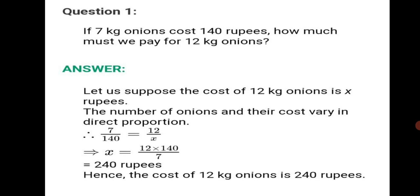Now, tell me students — if 7 kg requires 140 rupees, will 12 kg require more than 140 or less than 140? Definitely the cost will also increase. Both the quantities are increasing. That means we have a direct proportion here. The number of onions and their cost vary in direct proportion. When can we say they are varying in direct proportion? When the quantities are increasing in both ratios or decreasing in both ratios — not one increasing and the other decreasing. We see 7 kg onions cost 140 rupees; 12 kg onions means more onions will cost more rupees. More onions, more rupees — both increasing. So they are in direct proportion.